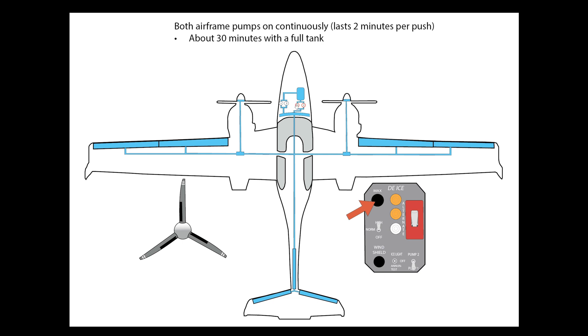So two minutes, and when you do that, both pumps run continuously. So in this case for two minutes, and then it would go back to the high setting after that two minutes. If you want the max setting to continue, you'd push the button again. For that two minute period, both of these pumps run continuously. If you're constantly hitting that max button over and over again every two minutes, that would last about 30 minutes with a full tank of de-ice fluid.